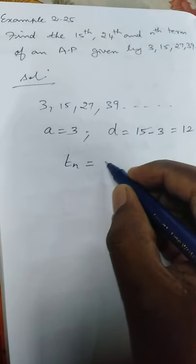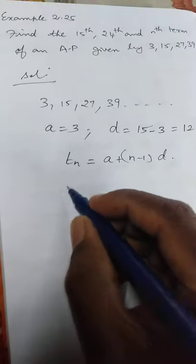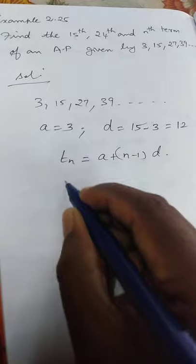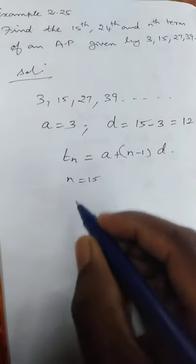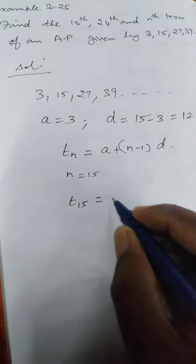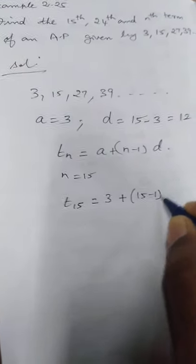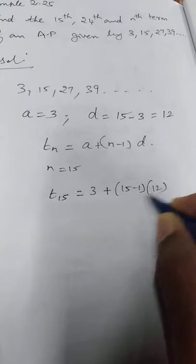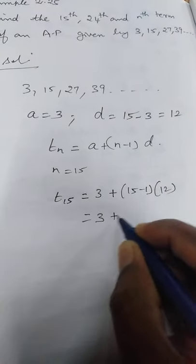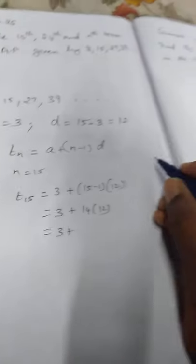The next one, 15th term. The general formula is Tn is equal to A plus n minus 1 into D. Now the first one, 15th term is equal to 15. Substitute the value T15 is equal to A. A is 3 plus n minus 1, 15 minus 1 into D. D is 12.